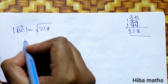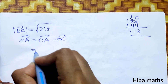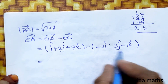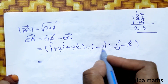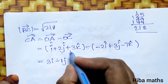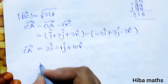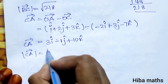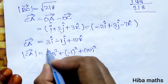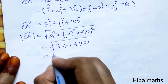CA vector equals OA minus OC. OA is i plus 2j plus 3k, and OC is minus 2i plus 3j minus 7k. So CA equals 1 minus minus 2 = 3i, 2 minus 3 = minus 1j, and 3 minus minus 7 = plus 10k. The modulus of CA vector is root of 3 squared plus minus 1 squared plus 10 squared, equals root of 9 plus 1 plus 100, which is root of 110.